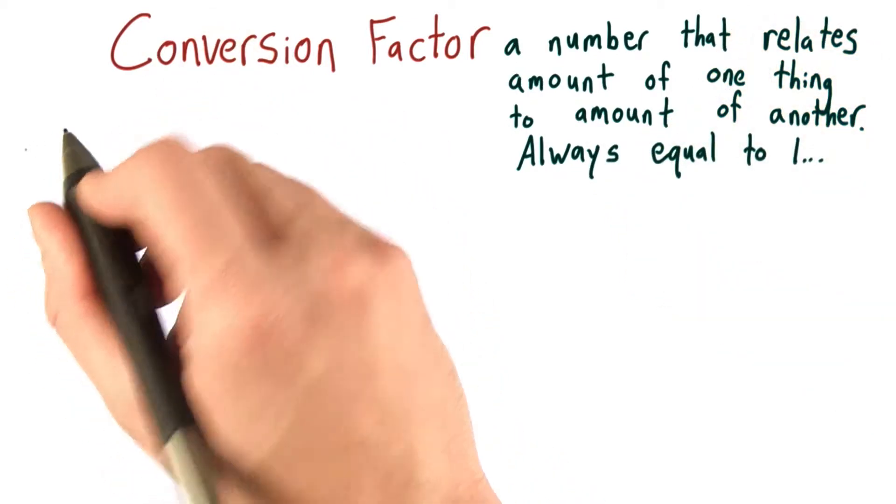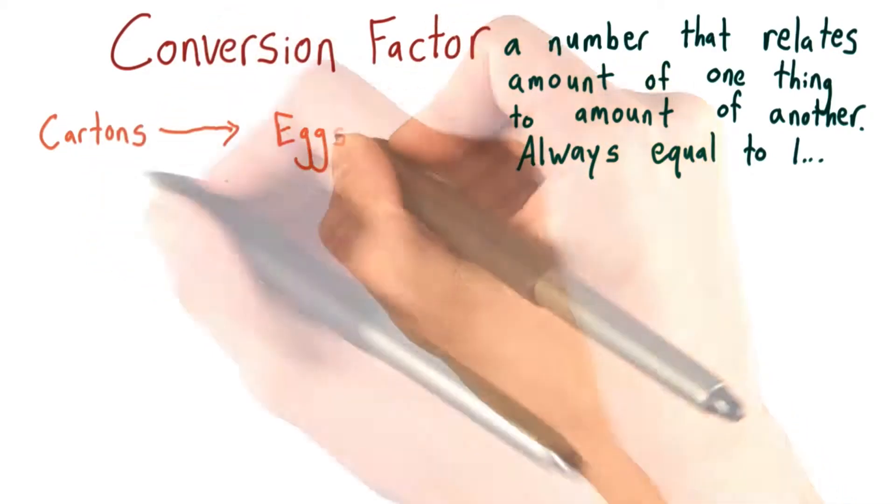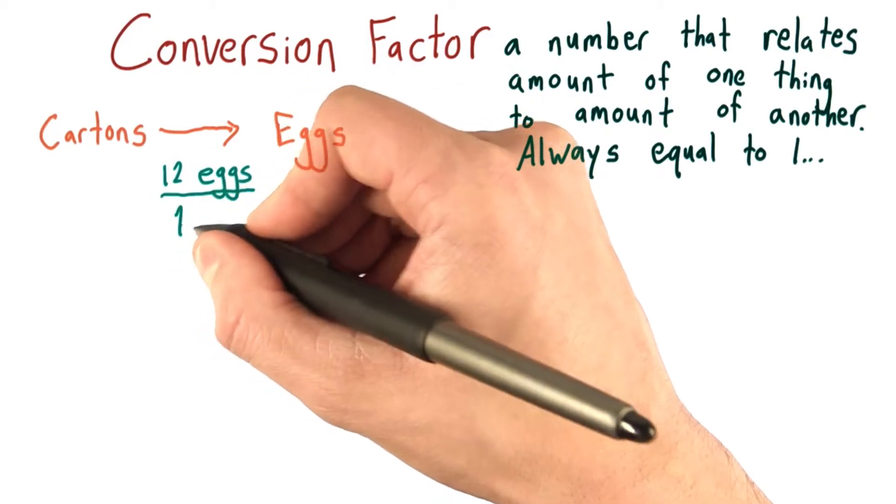We've already seen how to use a conversion factor to go from number of cartons to number of eggs. And the conversion factor we used was 12 eggs divided by 1 carton.